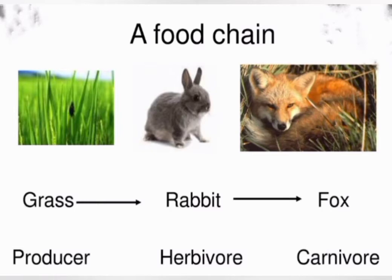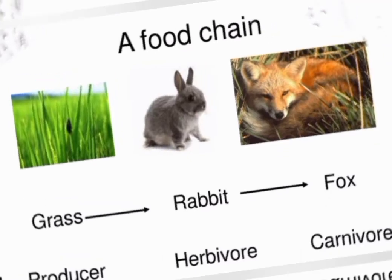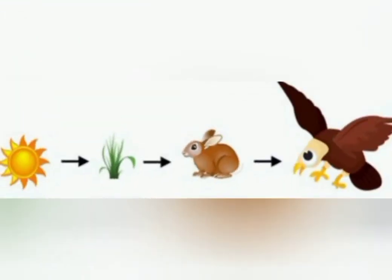In this example, grass is the producer, rabbit is a herbivorous animal and a primary consumer, while fox is a secondary consumer and a carnivorous animal. So it's a simple and linear food chain which is very easy to understand.